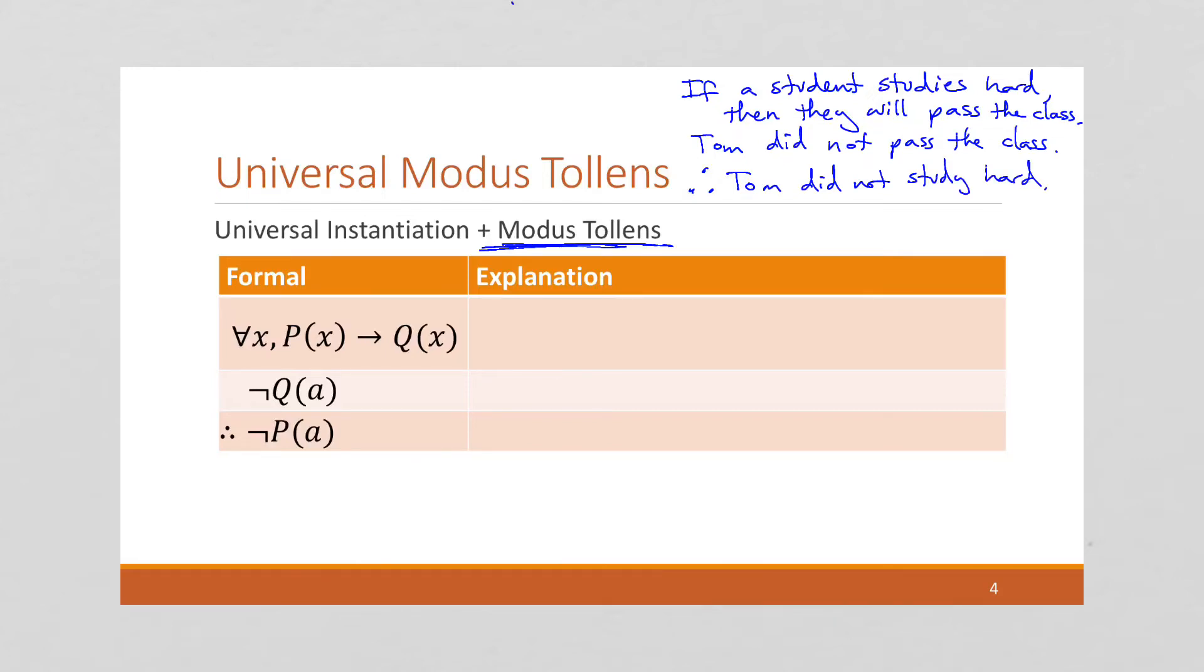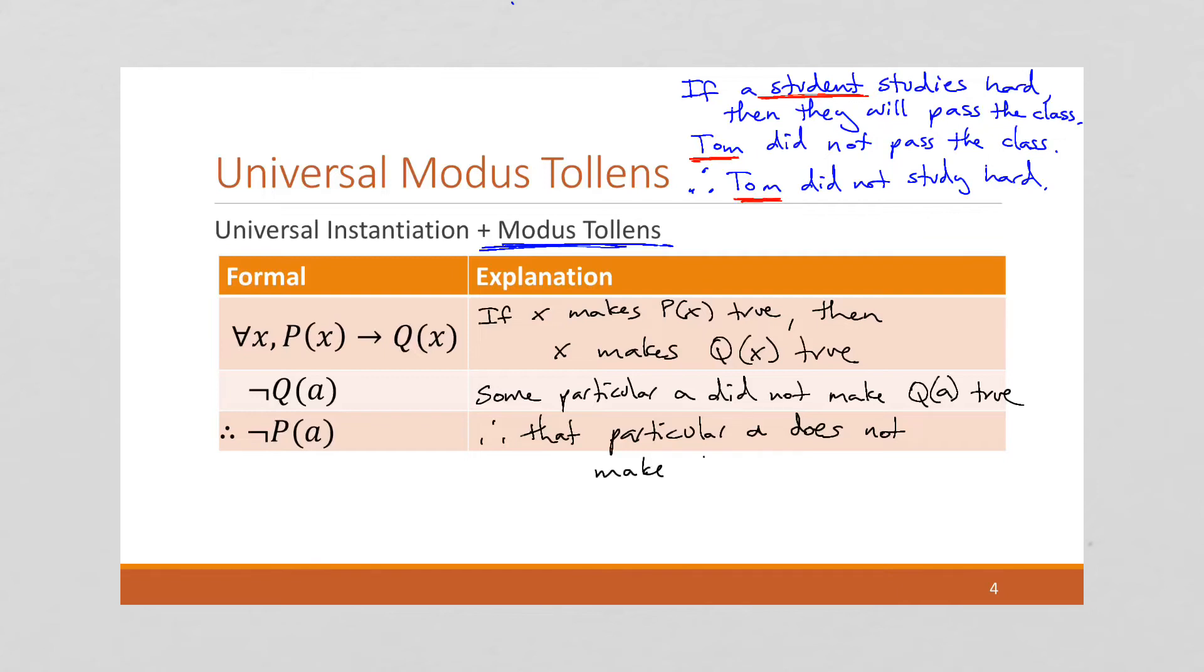And again, we're starting with a general category and we're moving down into the specific. So, once again, we can do our explanation that if X makes P of X true, then X makes Q of X true, we know that some particular A did not make Q of A true. So, therefore, that particular A does not make P of A true.